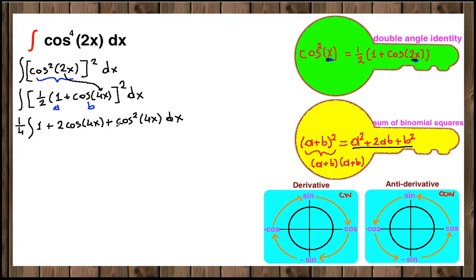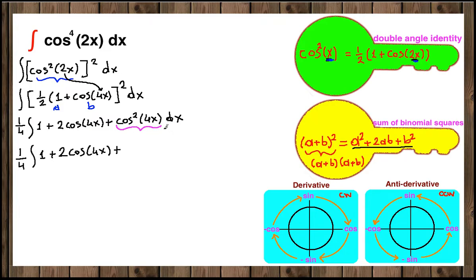Now we're going to apply the double angle identity one more time for the cosine squared of 4x piece. So we have one fourth in front of the integral of 1 plus 2 cosine of 4x, and cosine squared of 4x turns into one half times 1 plus cosine of 8x, since we're doubling the angle from 4x to 8x according to the double angle identity.